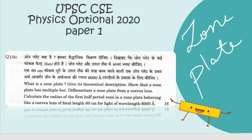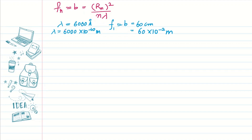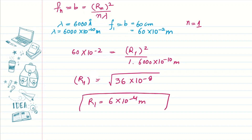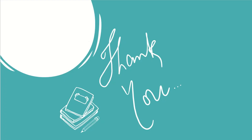Now for the numerical: calculate the radius of the first half period zone in a zone plate behaving like a convex lens of focal length 60 cm for light of wavelength 6000 Å. Using fn = rn²/(nλ), with n = 1, f = 60 × 10⁻² m, and λ = 6000 × 10⁻¹⁰ m: r1² = f × λ = 60 × 10⁻² × 6000 × 10⁻¹⁰ = 36 × 10⁻⁸. Therefore r1 = 6 × 10⁻⁴ m. That is the radius of the first half period zone. If you have any doubts, write in the comment box. Please like, share, and subscribe.